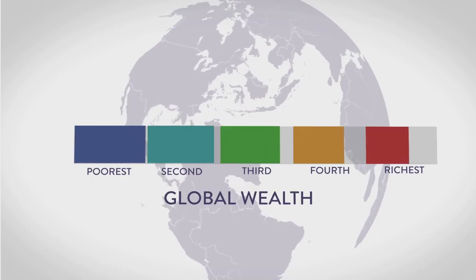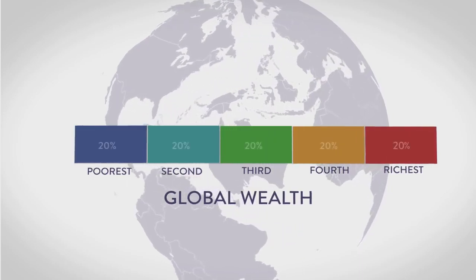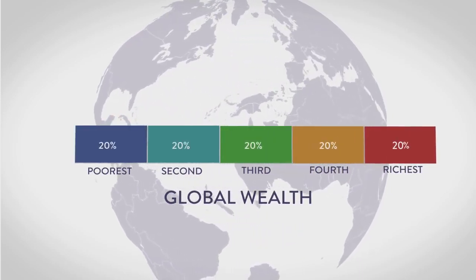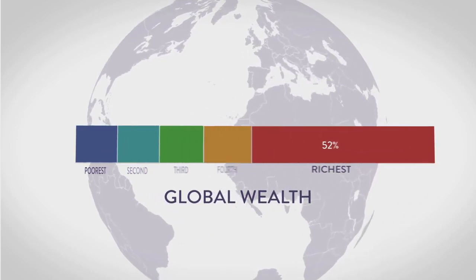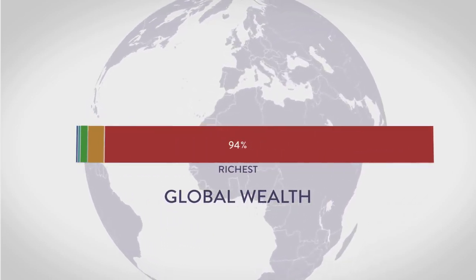A perfectly even distribution of wealth among all living people, with everyone divided into 5 equal groups. Now, let's show how much each group actually has. Shocking, right?